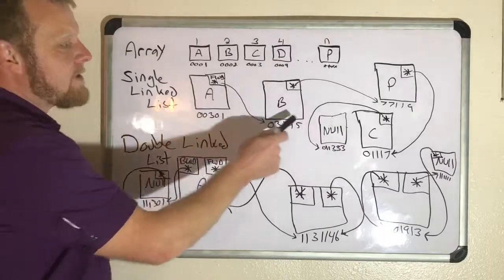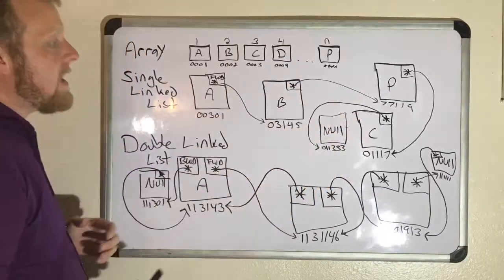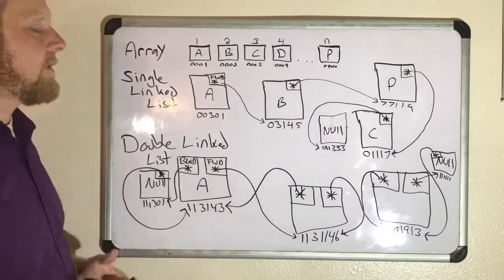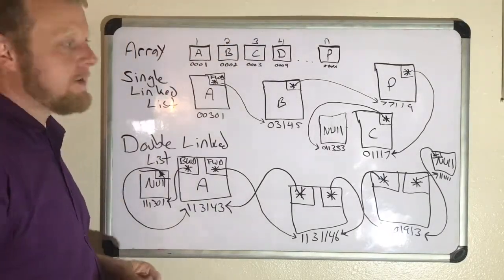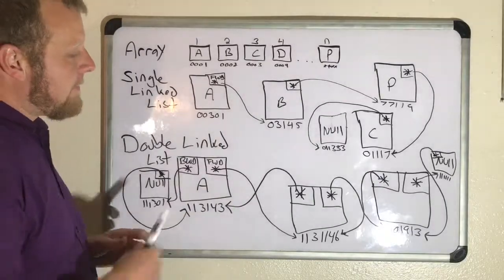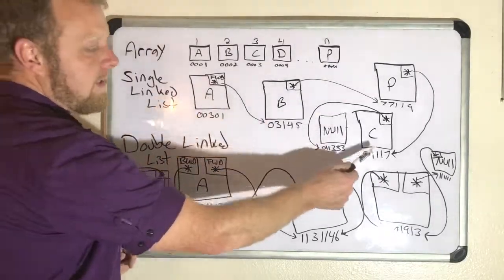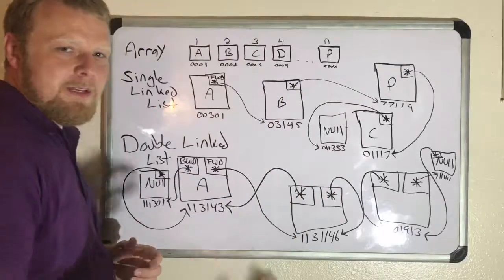So you finally made it to C. So you had to traverse every single one of them to get to C, unlike the one up here where I knew C was the third element. Of course, they have to be in order, and you have to kind of know where they are. But with this one, you can't jump from A to C. You have to traverse it. So that can be time consuming.